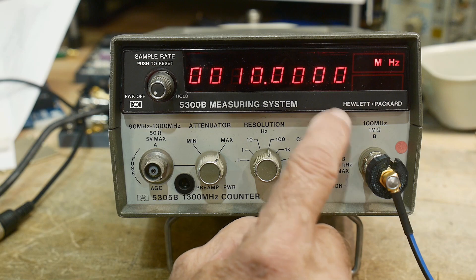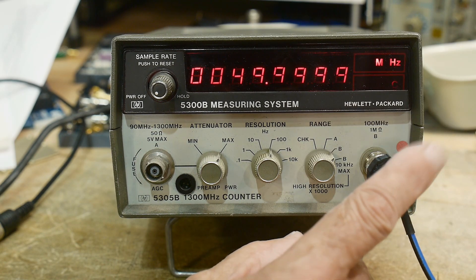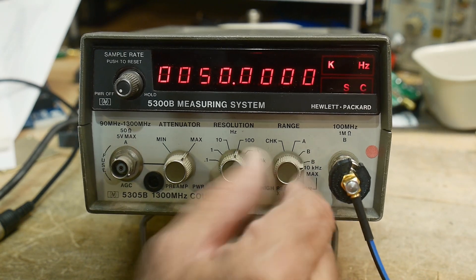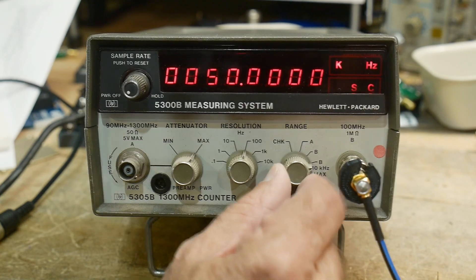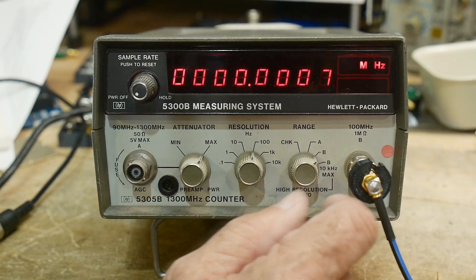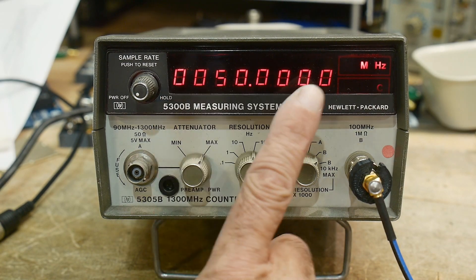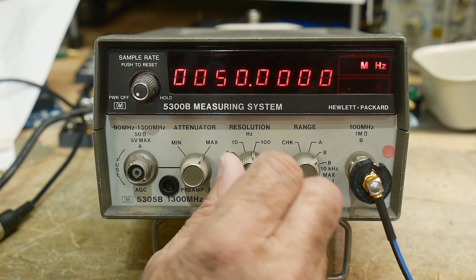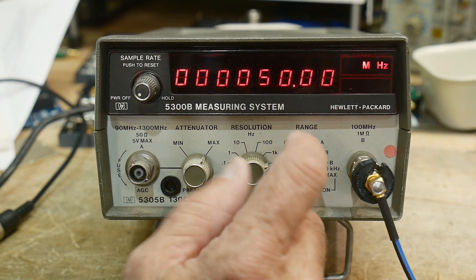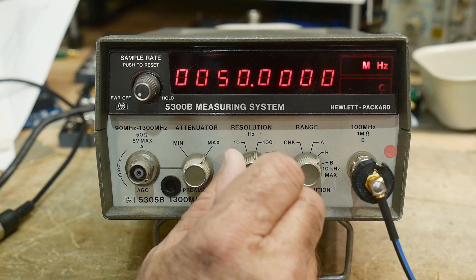A means you're on the A channel which is over here. B means you're on the B channel which is over here. Then there is B but 10 kilohertz maximum, so it gives you extra resolution. You can set the resolution, so how many digits of accuracy do you want. You can make it smaller and smaller, which is much faster, and then you can get more and more digits of accuracy.